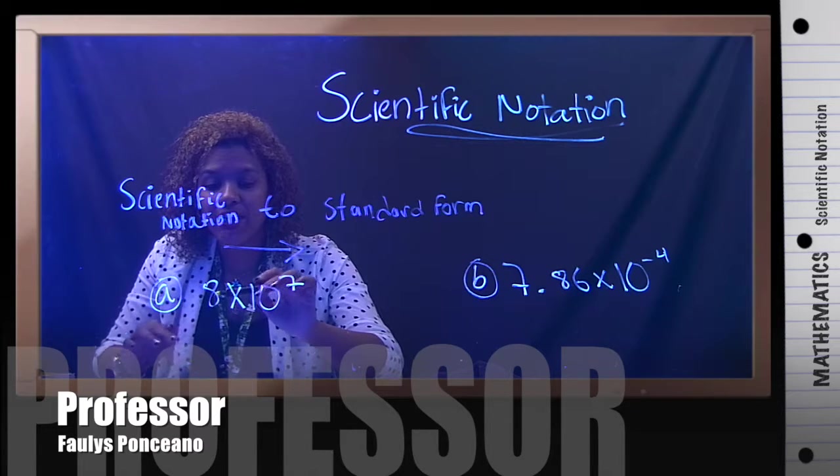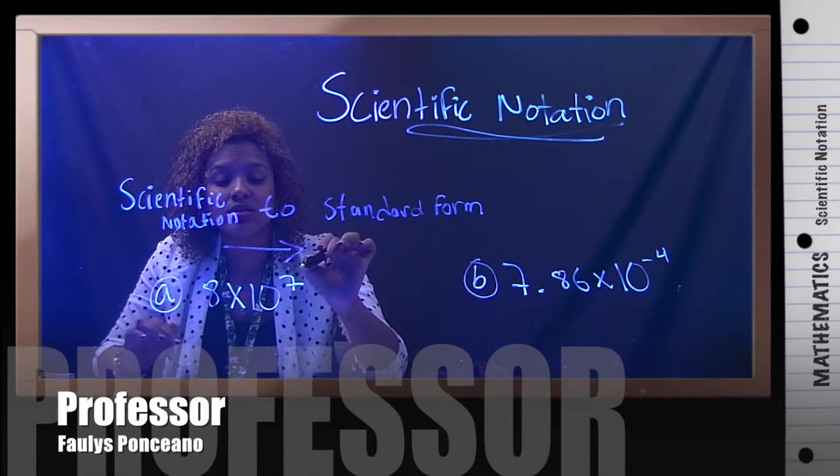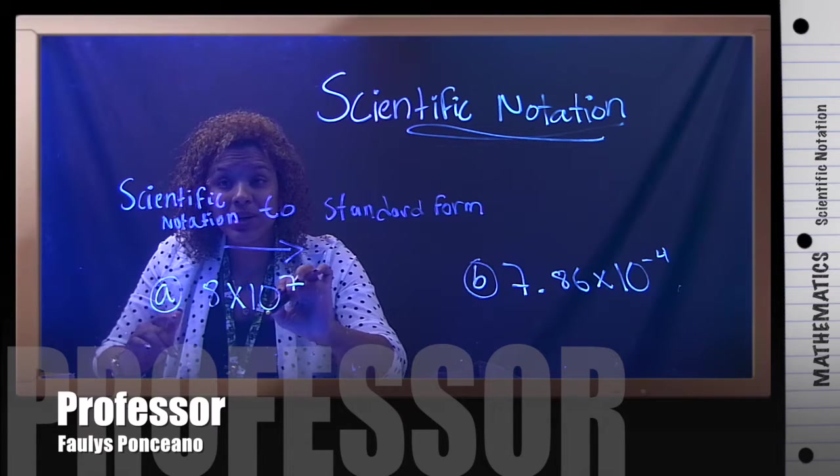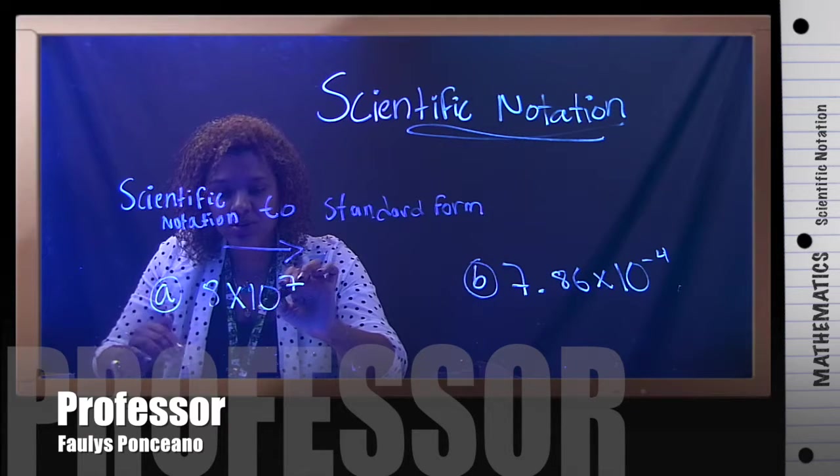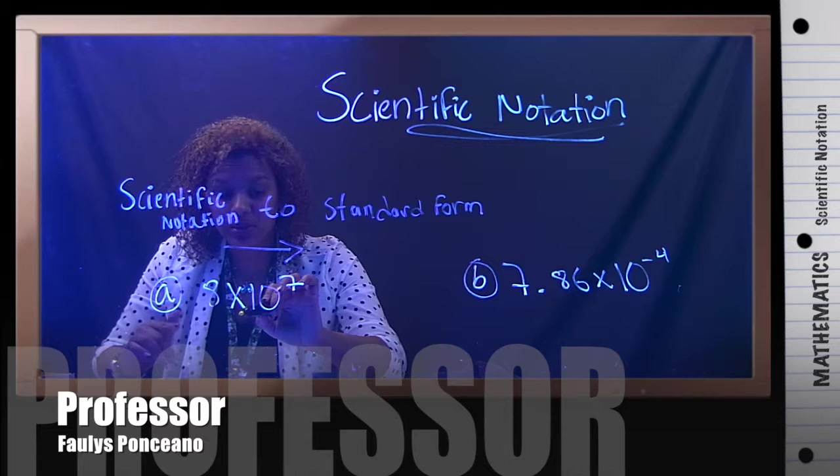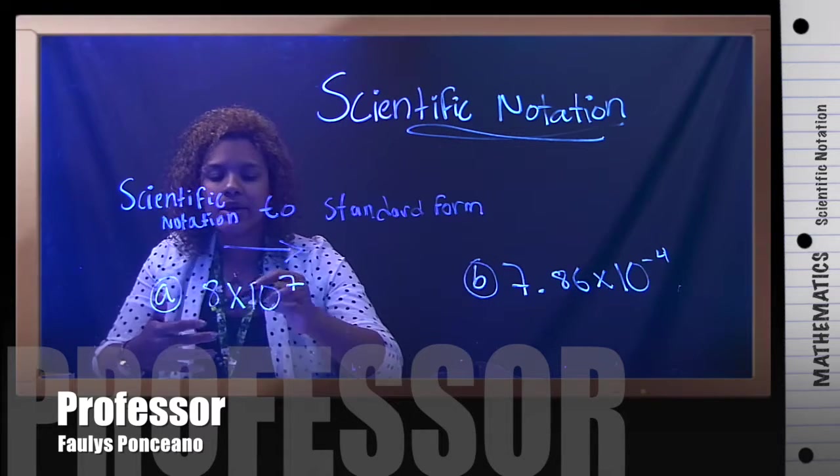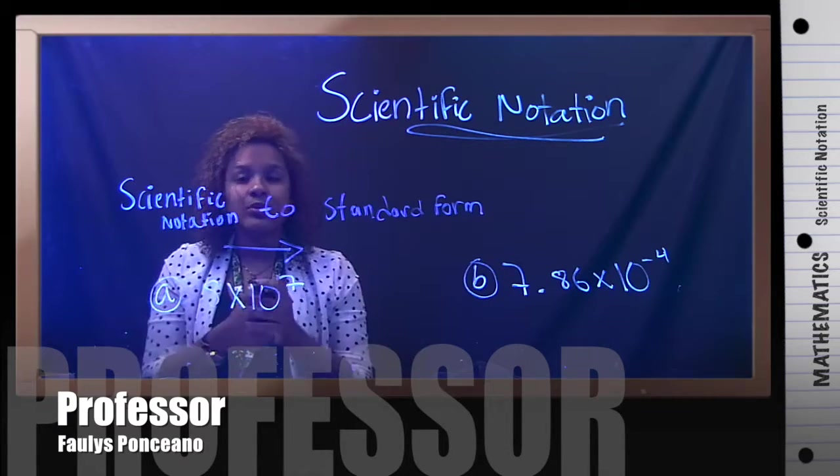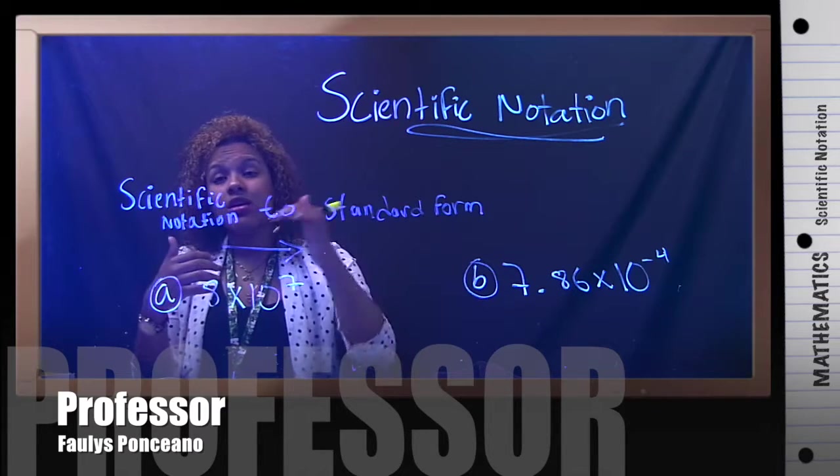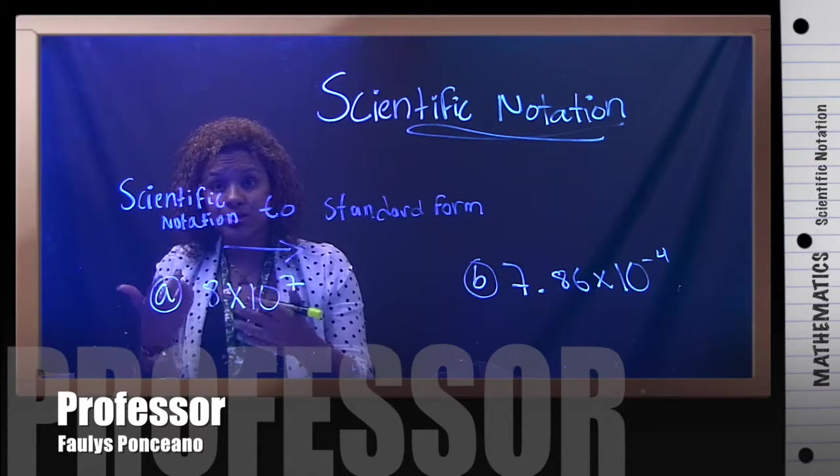So, for example, A, I have 9 times 10 to the 7. It's always base 10 for scientific notation. You want to have the multiplication symbol and the exponent. Now, what does the exponent mean? The exponent means how many spaces of zeros you're going to add into the number.